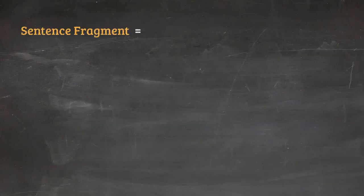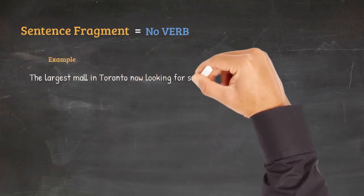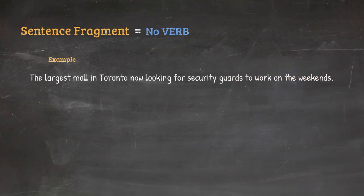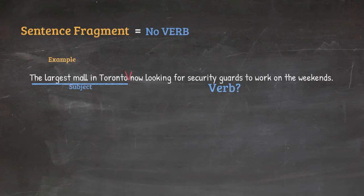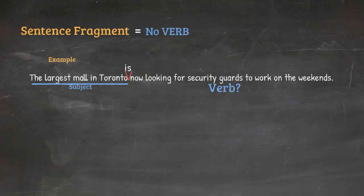The sentence can also be missing a verb. For instance, 'the largest mall in Toronto now looking for security guards to work on the weekends.' We have the subject — the largest mall in Toronto — but no verb. There should be the verb 'to be' right after the subject, as in 'the largest mall in Toronto is now looking for security guards to work on the weekends.'